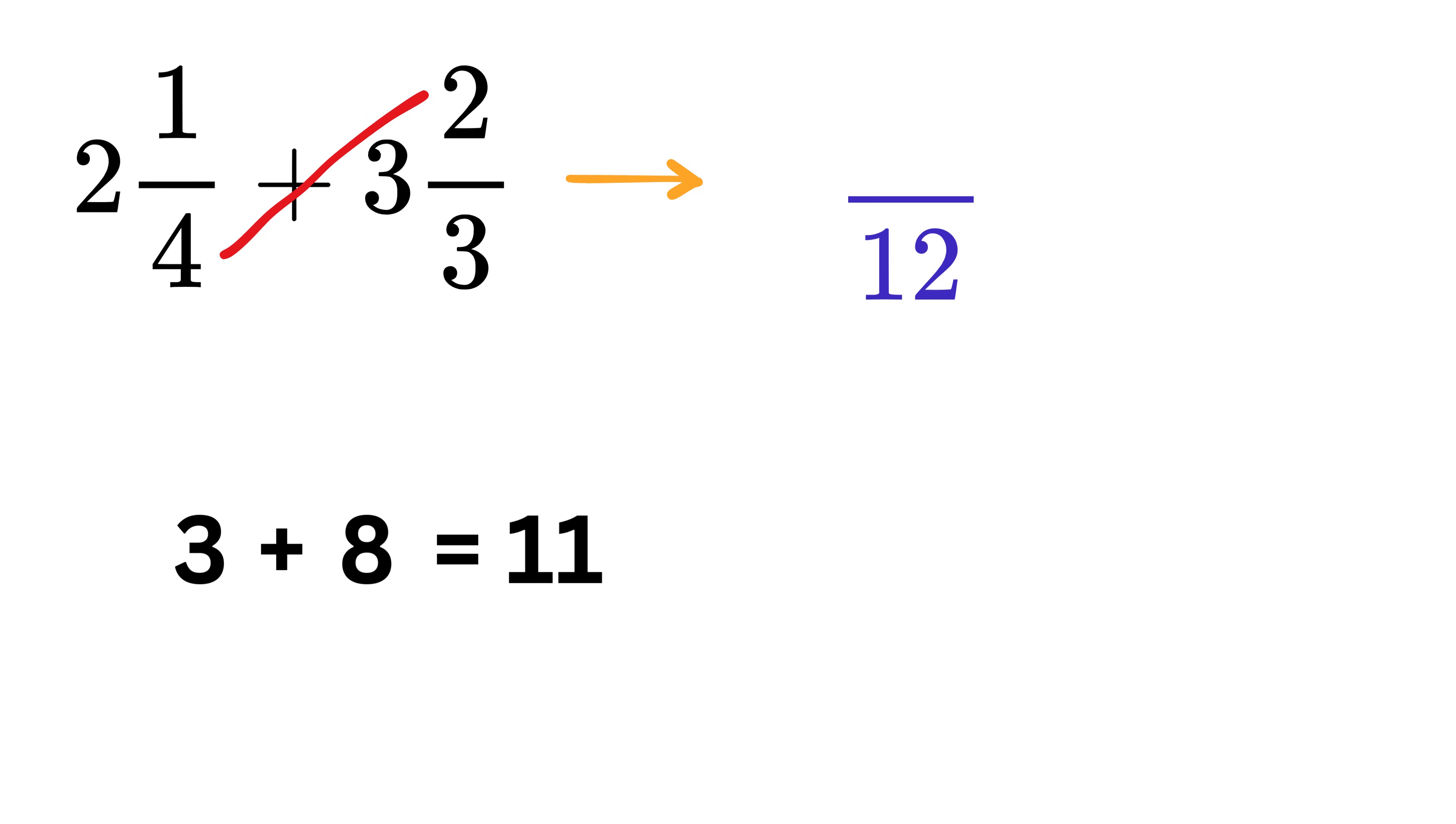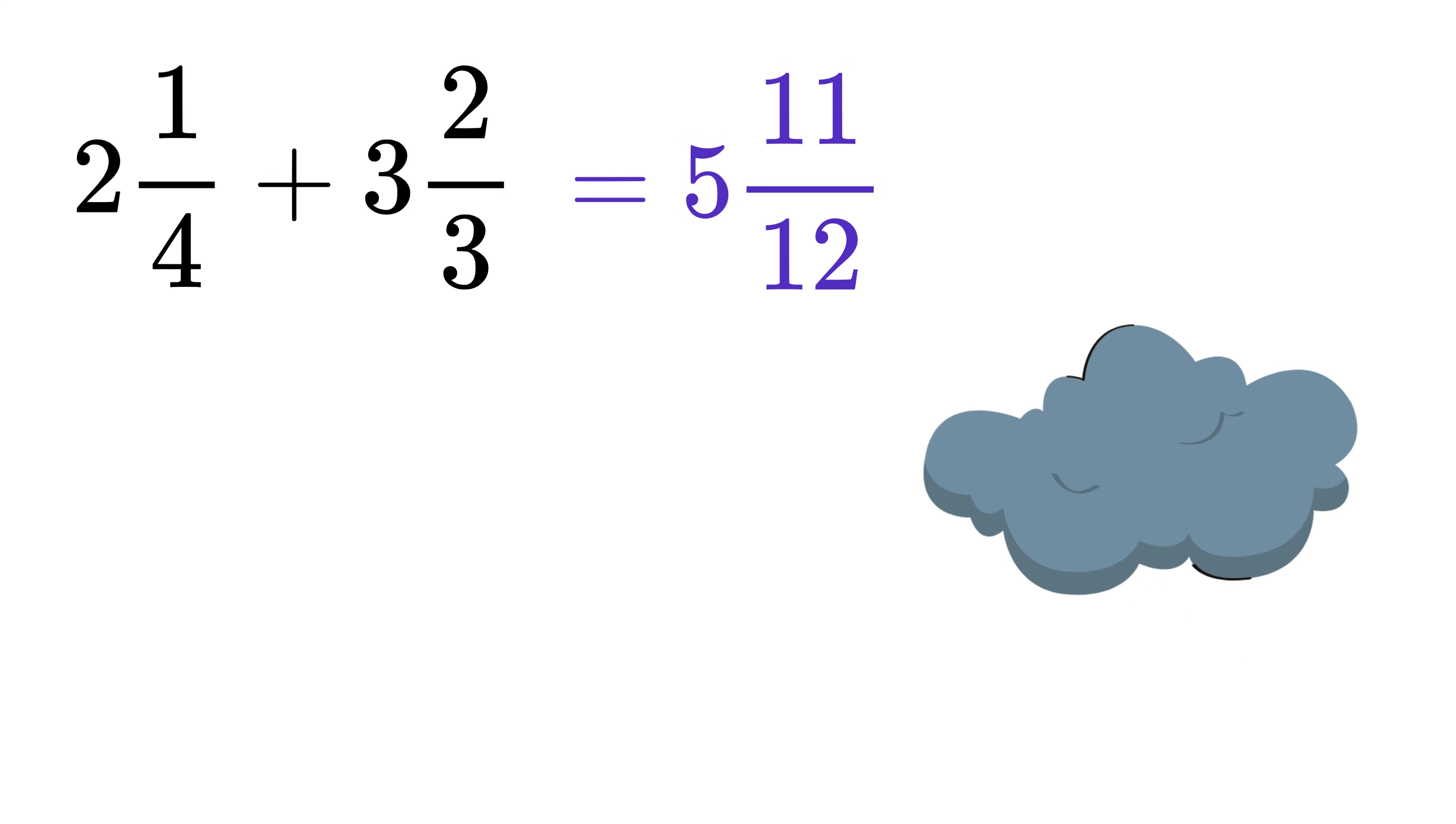Now add both of them to get 3 plus 8 equals 11. Write it in the numerator. Finally, add these two whole numbers, 2 and 3, to get 5 and put it here. That's it! The answer is 5 11/12. See, it was lightning fast. No need to convert to improper fractions and all that stuff.